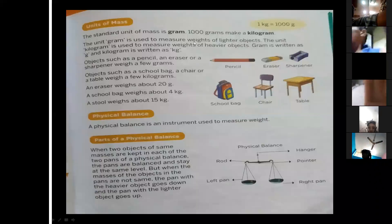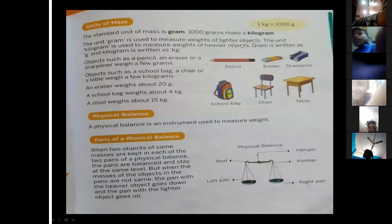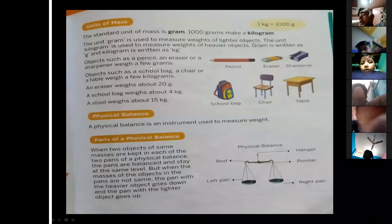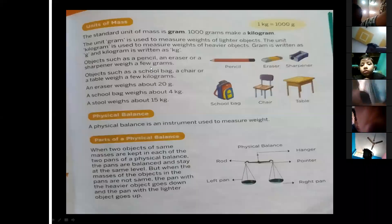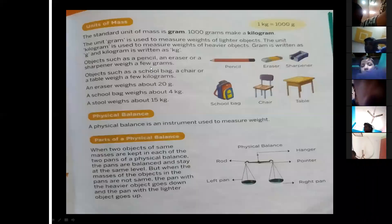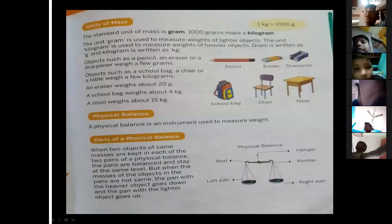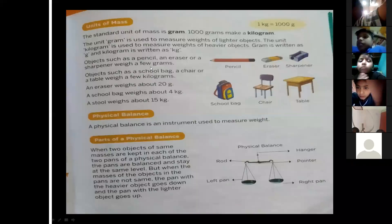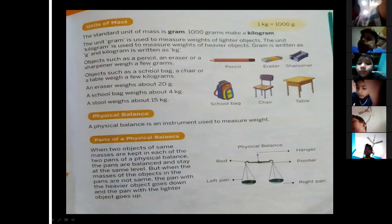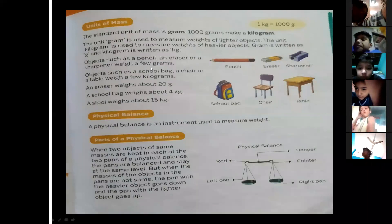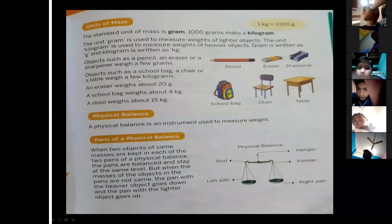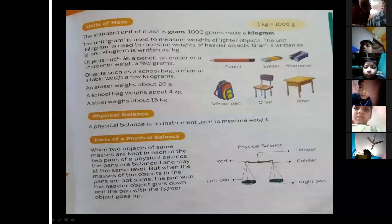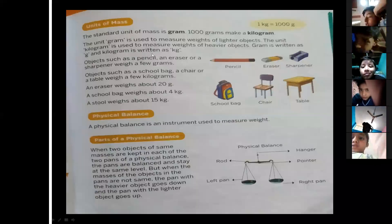The unit gram is used to measure the weights of lighter objects. The unit kilogram is used to measure the weights of heavier objects. Gram is written as g, and kilogram is written as kg.